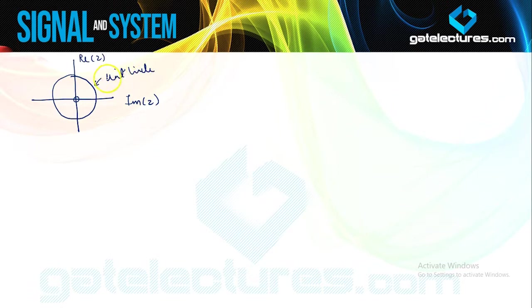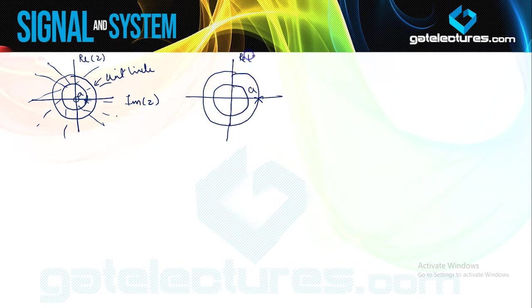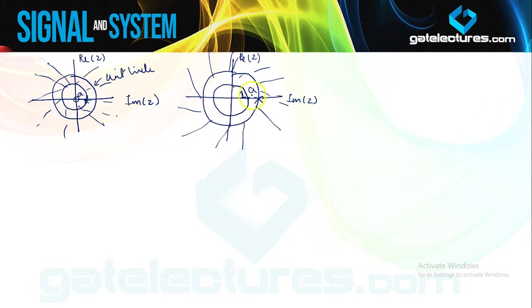We need |Z| to be greater than |a|. Suppose a lies somewhere here. We draw a circle with radius |a|. Then our ROC is going to be outside this circle. One case is where |a| is less than 1, and another case is where |a| is greater than 1 — meaning a lies outside the unit circle. The unit circle has the same significance as the j*omega axis had in Laplace transform. For a system to be stable, the ROC must contain the unit circle. For a system to be causal, poles must lie inside the unit circle.